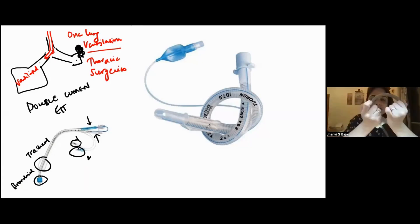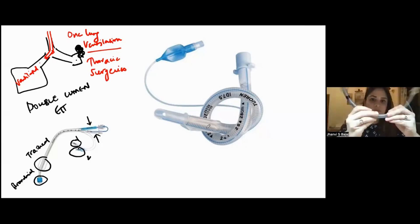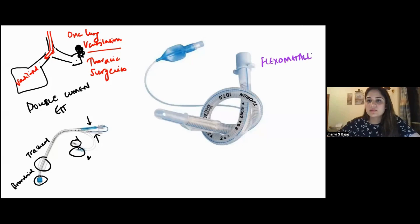Okay. So this tube is basically very flexible because of these metallic rings. And also, if I put a big load on it, like suppose I put this bottle on it, it will not get compressed. The lumen will not get compressed or kinked. So this is called a flexometallic or armored tube.